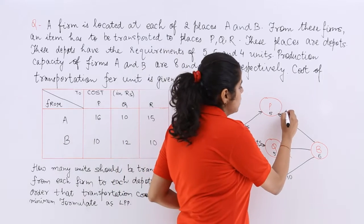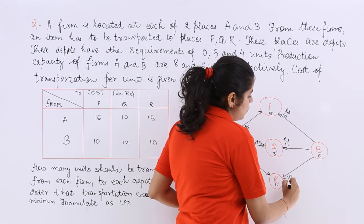So let's write rupees. Let's write rupees everywhere. These are all rupees. So rupees 10, rupees 12 and rupees 10.